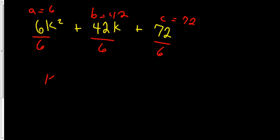6 divided by 6 is going to be positive 1. 42 divided by 6 is going to be positive 7. And 72 divided by 6 is going to be a positive 12.